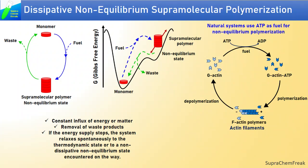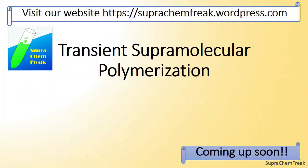Using orthogonal reaction pathways, natural systems control the depolymerization process in a temporally programmable way, which shall be discussed in our upcoming videos on transient supramolecular polymerization. Thanks for watching this video. Please share your thoughts via comments and keep supporting us. Thank you.